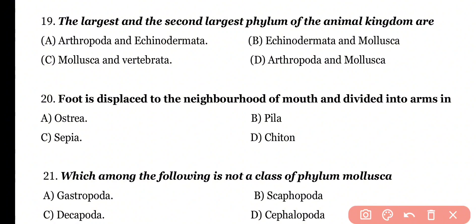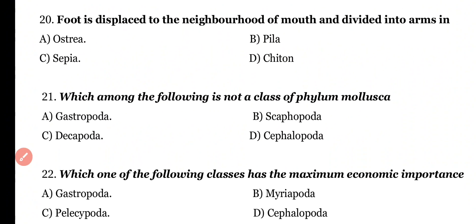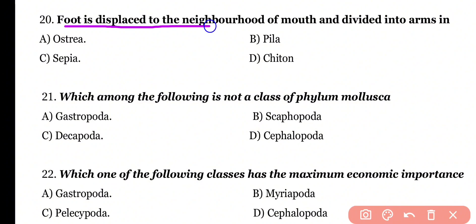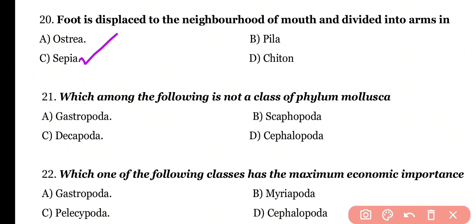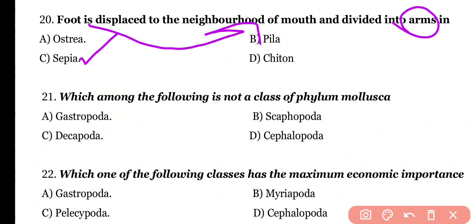Question number 20: In which organism is the foot displaced to the neighborhood of the mouth and divided into arms? Options: Ostrea, Pila, Sepia, Chiton. Correct answer is option C. Sepia belongs to class Cephalopoda, in which the foot is displaced towards the neighborhood of the mouth and divided into arms and tentacles.